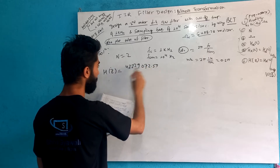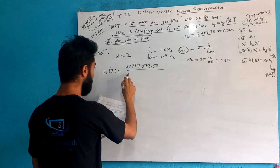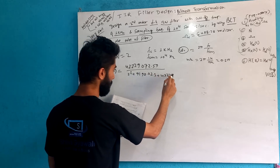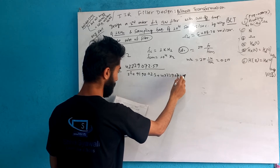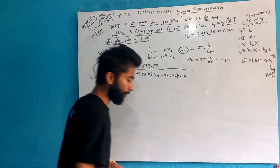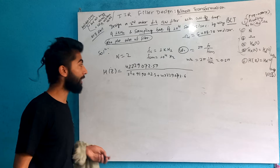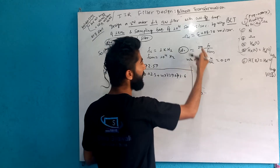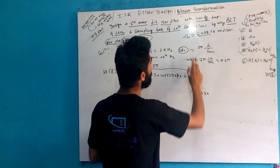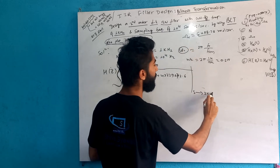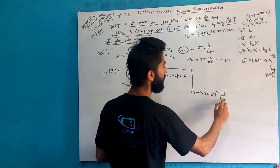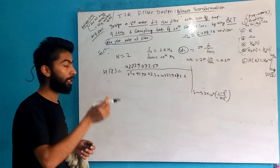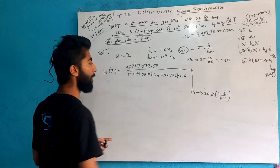Now we apply the bilinear transformation substitution. We substitute s = 2 * 10^4 * (1 - z^{-1}) / (1 + z^{-1}) into the analog prototype transfer function. The denominator becomes s^2 plus 9190, and the numerator is 42229072.59.